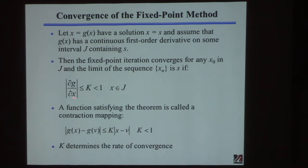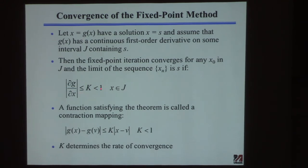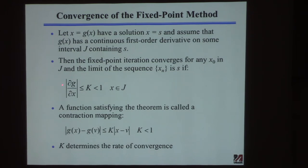The key condition is this: you take the derivative of your function g with respect to x. The absolute value of that derivative has to be less than one near the solution. In other words, the derivative has to not be changing too quickly near the solution. If it's changing too quickly, there are no guarantees it's going to work.